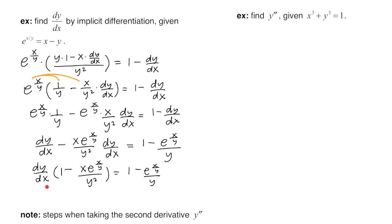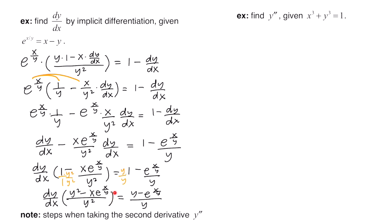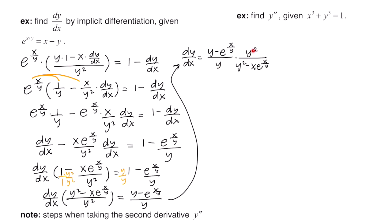We factor out dy/dx, combining terms into single fractions by finding common denominators. Multiplying the left-side bracket over y squared gives us y squared minus x·e^(x/y) all over y squared. Multiplying the right-side fraction over y gives us y minus e^(x/y) all over y. To isolate dy/dx, we multiply both sides by the reciprocal y squared over (y squared minus x·e^(x/y)), then reduce y and y squared. The final answer is dy/dx equals y times the quantity (y minus e^(x/y)) all over (y squared minus x·e^(x/y)).